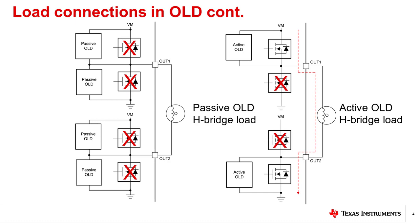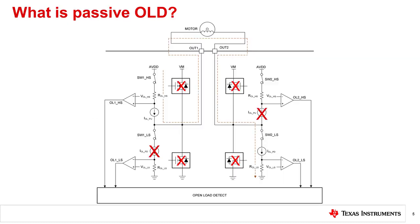During passive OLD, only the diagnostic current flows to the load. During active OLD, the load's current flows from VM to either output, then to the other output, and finally to ground. The passive OLD is carried out when the load's driving FETs are not in operation. This diagram shows the passive OLD circuit for a BDC — short for brush DC — driver with integrated FETs.